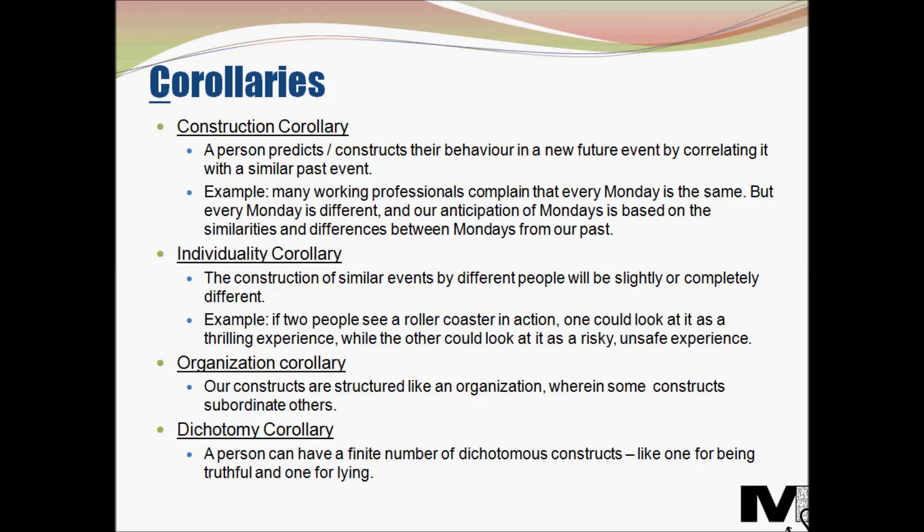The next type of corollary is the individuality corollary. People differ from one another in the construction of events. However similar two people are, their construction of similar events will still be slightly or could be completely different. For example, if two people see a rollercoaster in action, one could look at it as a thrilling experience, while the other could look at it as a risky, unsafe experience which is definitely not worth their time or money.